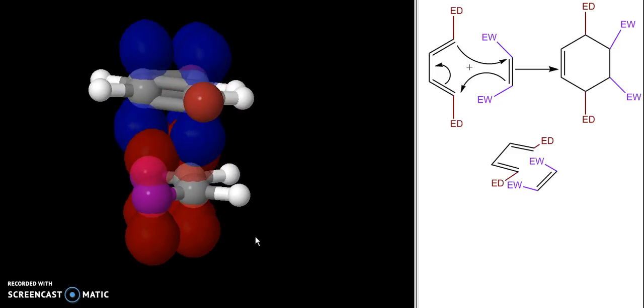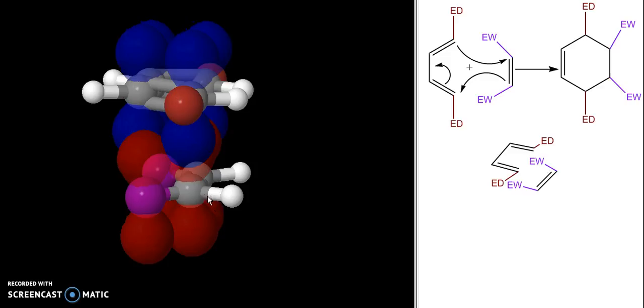This wouldn't be the case if we didn't have the endo approach—if we had these groups sticking out where these white hydrogens are. So that's why we get the endo approach.